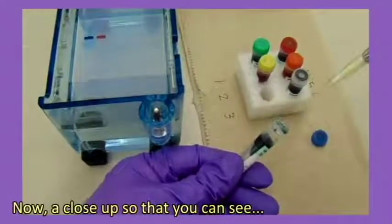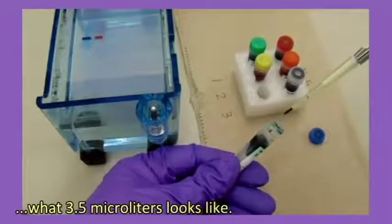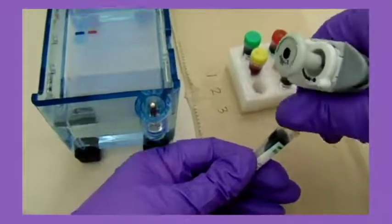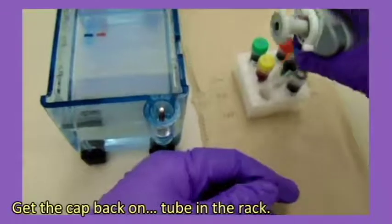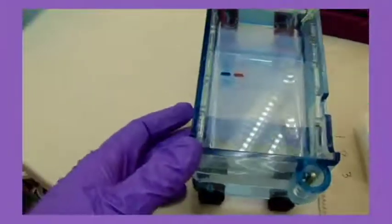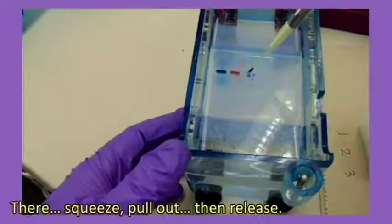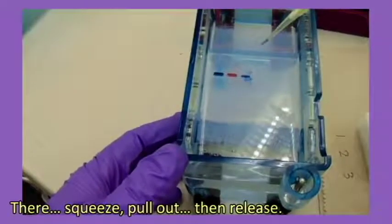Now a close up so that you can see what 3.5 microliters looks like. Get the cap back on. Tube in the rack. It can take a second to find the opening. There. Squeeze, pull out, then release.